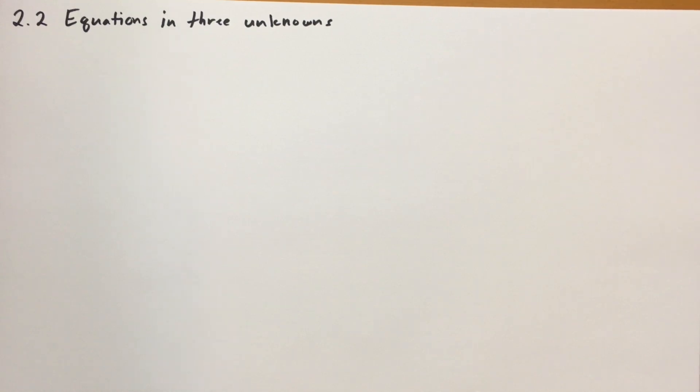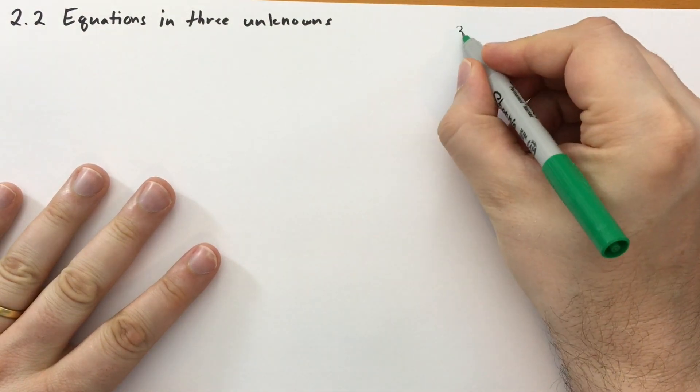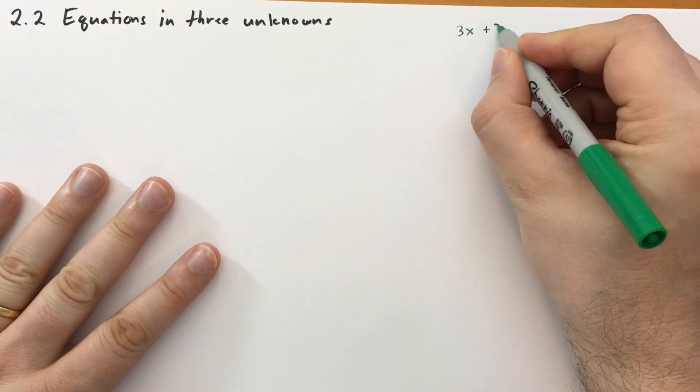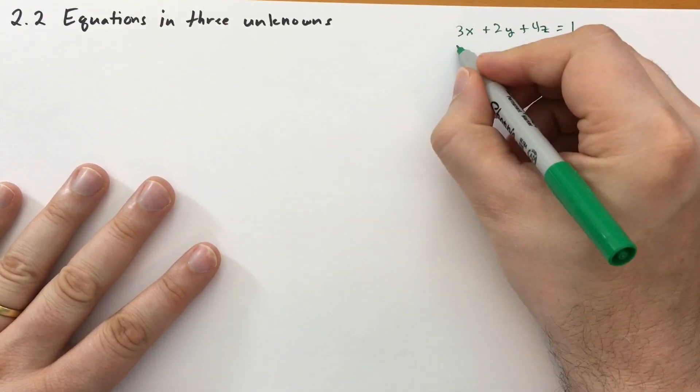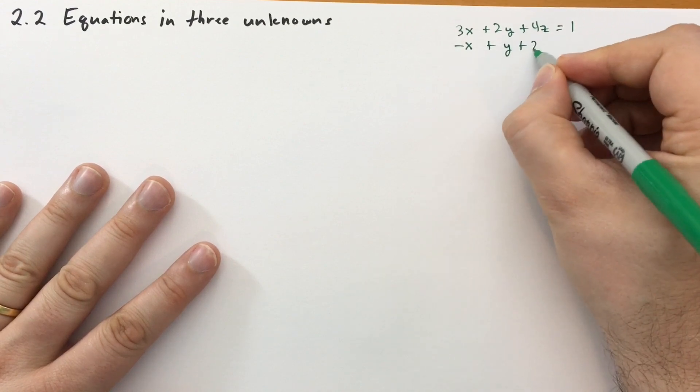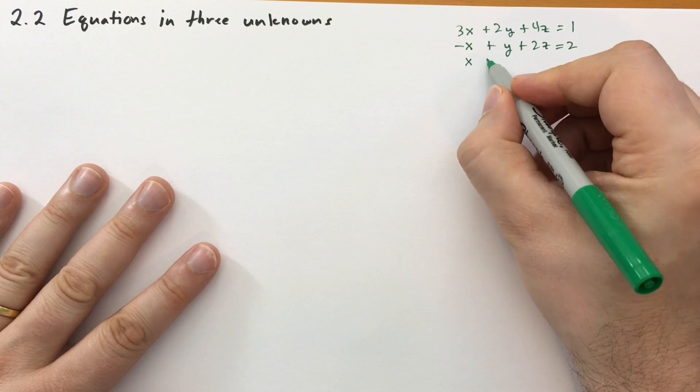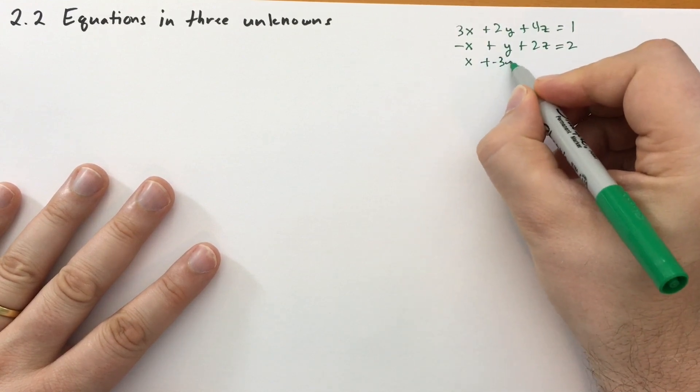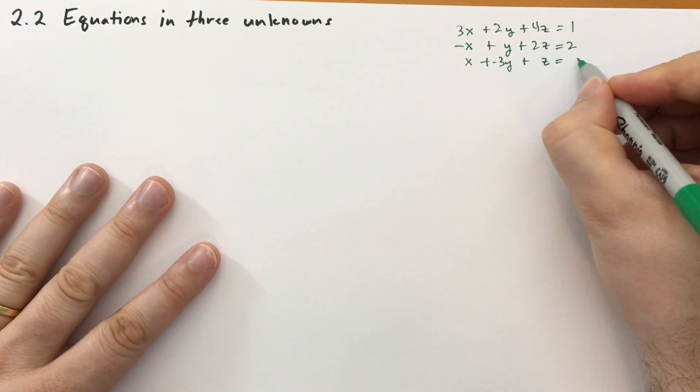Okay, so let's take a look at this system of equations. Let's write down these three equations. So we have 3x plus 2y plus 4z is equal to 1. Then we have minus x plus y plus 2z is equal to 2. And then we have x minus 3y, I wrote plus minus, excuse me, and then plus z is equal to minus 1.